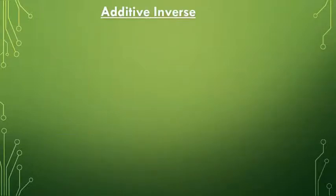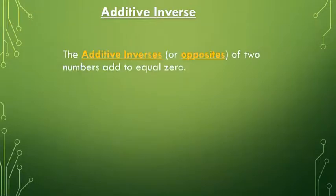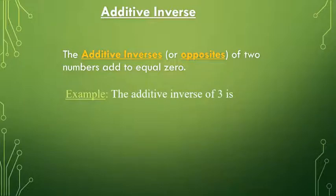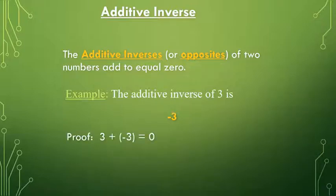Now we will learn about the additive inverse. The additive inverse, or opposites, of two numbers add to equal 0. For example, the additive inverse of 3 is minus 3. Using the addition rule, since the signs are different we subtract them, and positive 3 plus minus 3 gives us 0, which is neither positive nor negative.